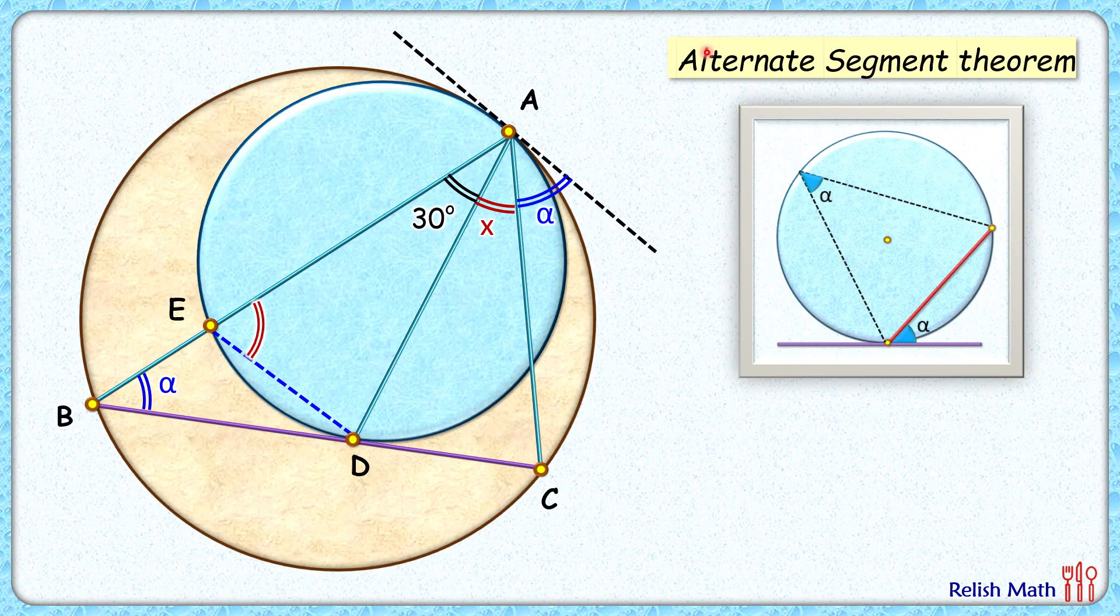So for this, again using alternate segment theorem, that is angle between the tangent and the chord. Now we are taking it with respect to this blue circle. With respect to the blue circle, the tangent is the same and AD is the chord, so the angle between them is alpha plus x. So that will be the same as the angle subtended by this chord in the remaining segment of the circle, that's in the blue circle. So this angle will be the same as x plus alpha degrees.